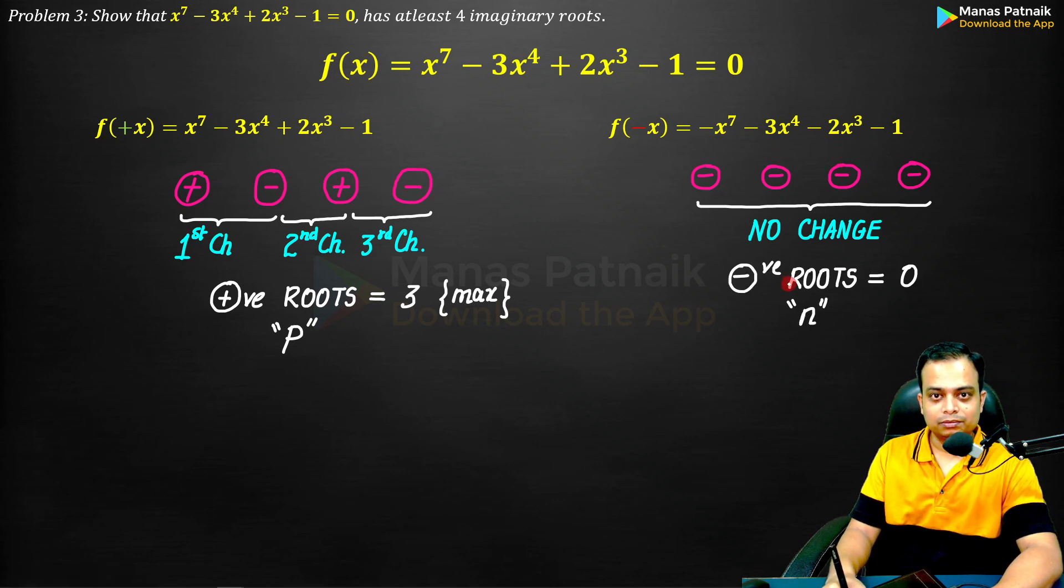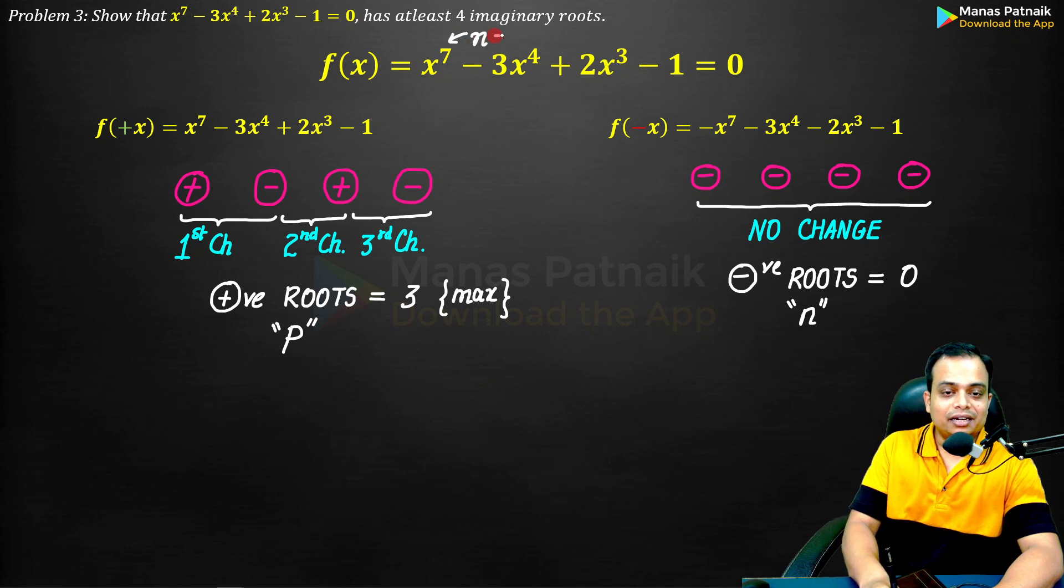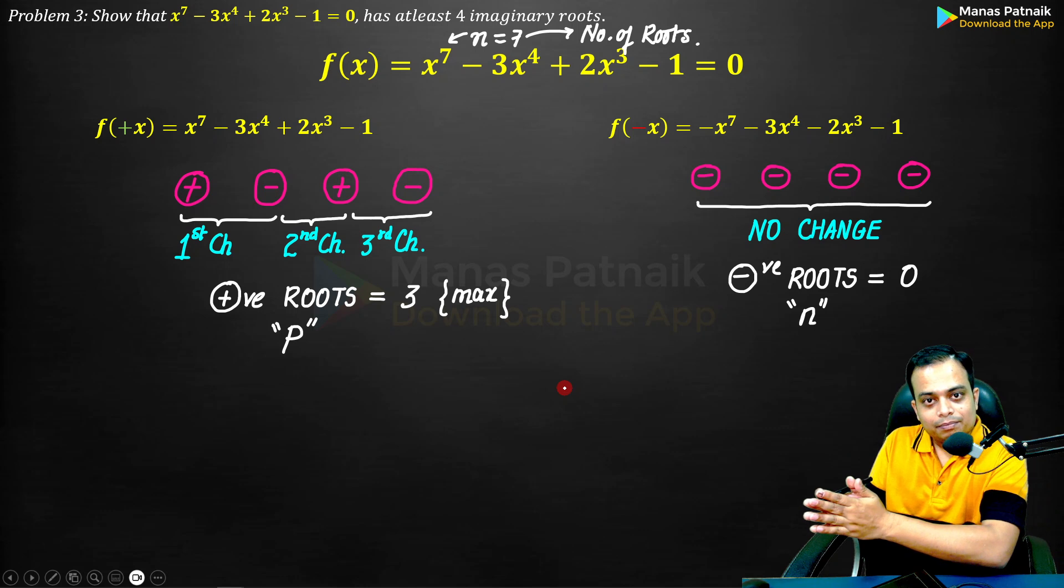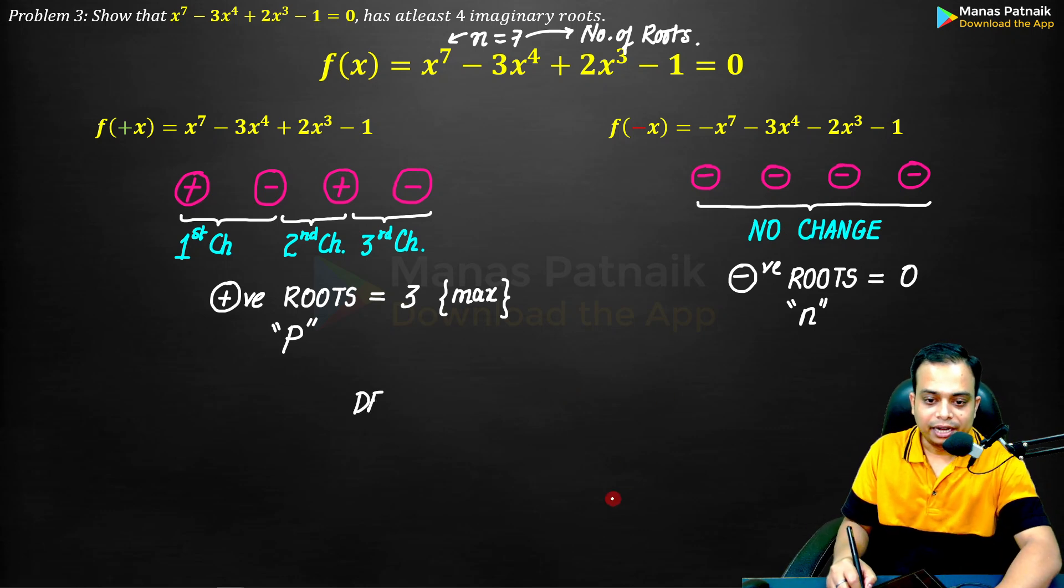Remember, this property is very important. Now, this is the degree. Degree happens to be seven, and whatever the degree is, that qualifies as the number of roots. Here the degree is seven, number of roots are going to be seven. Those roots can be classified into real category as well as imaginary category.